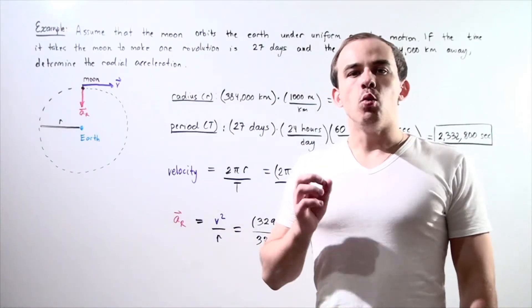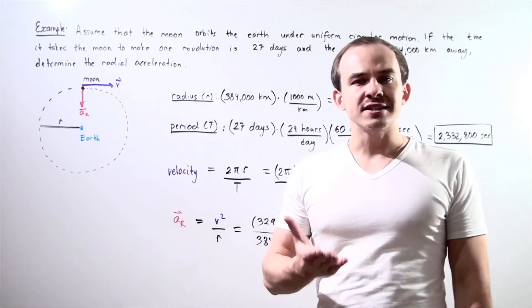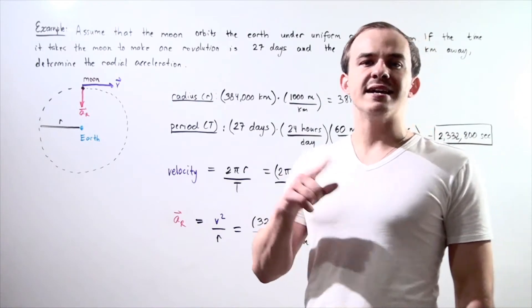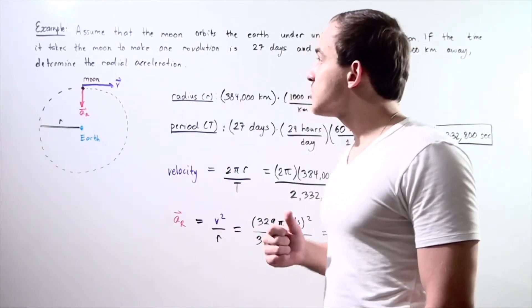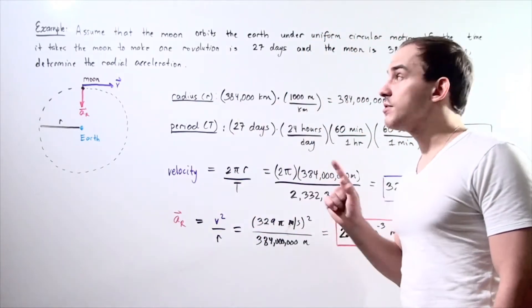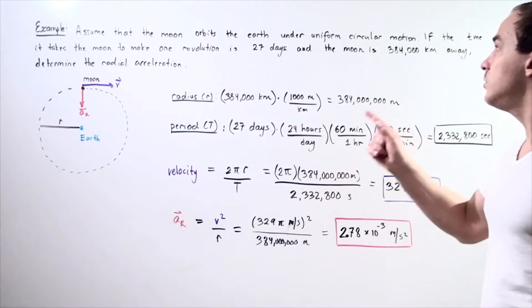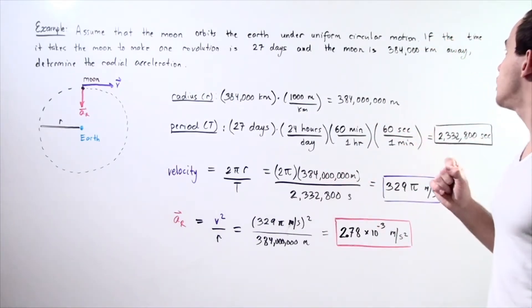Let's determine what the centripetal, the radial acceleration of the Moon is as it orbits our Earth. Let's make the assumption that the Moon orbits the Earth under uniform circular motion.